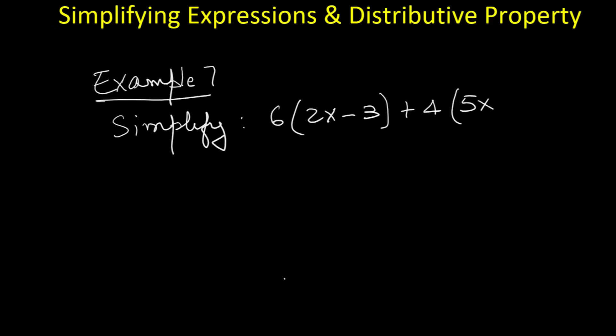Example 7. Simplify 6 times the quantity 2x minus 3 plus 4 times the quantity 5x plus 1. First distribute each set of parentheses. 6 times 2x is 12x and 6 times negative 3 is negative 18. 4 times 5x is 20x and 4 times 1 is 4. Now put it all together: 12x minus 18 plus 20x plus 4. Combine like terms. 12x plus 20x is 32x. Negative 18 plus 4 is negative 14. So the answer is 32x minus 14.